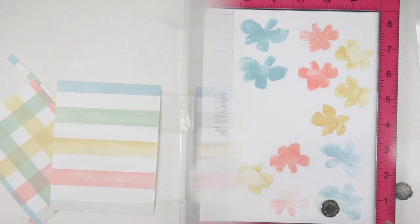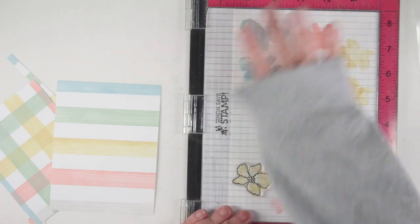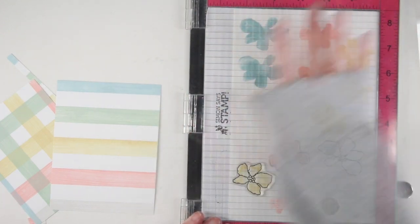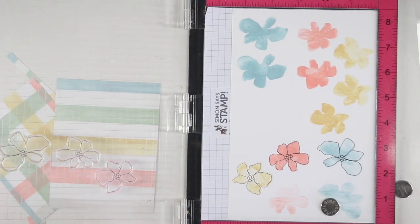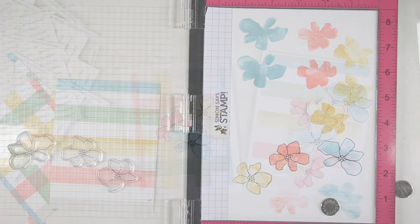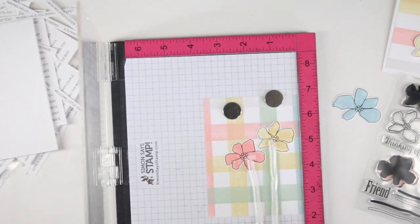On my next flower, the next step is to stamp the black outlines around all my flowers. As you can see I've stamped a bunch, not sure how many I'll be using for my project, but once I have the black outlines done I can cut these out and start adding them to my cards.